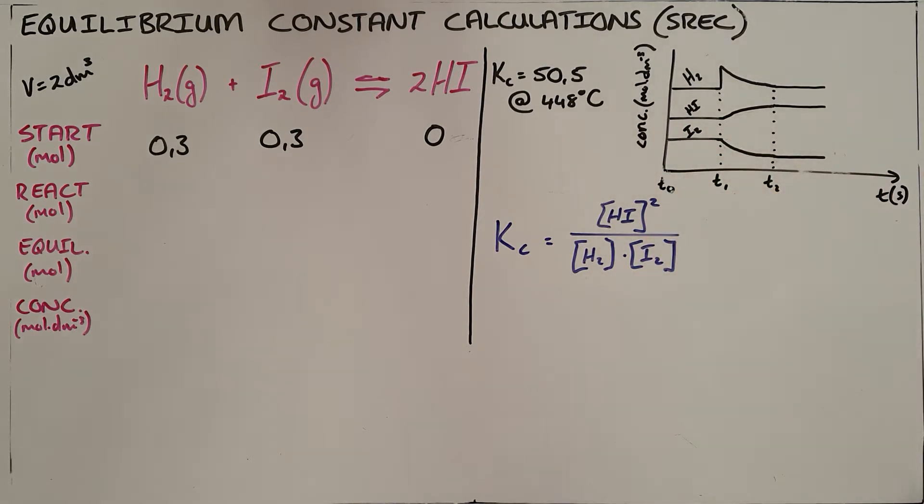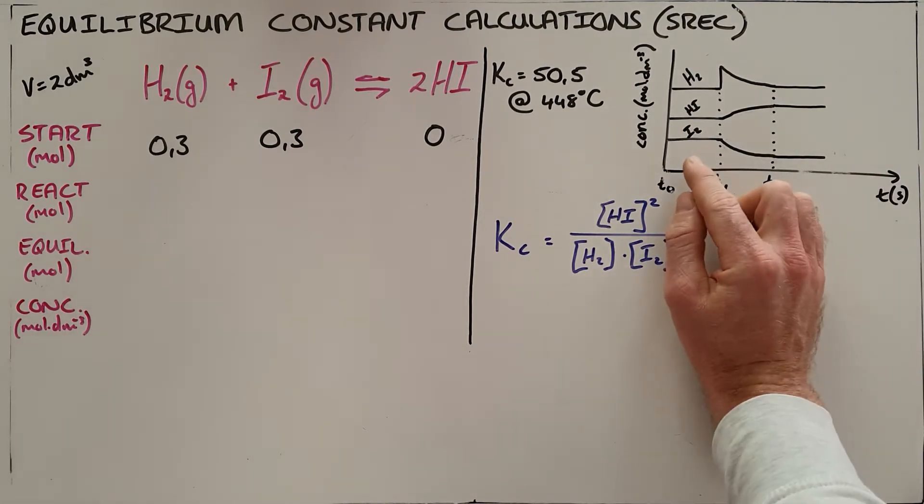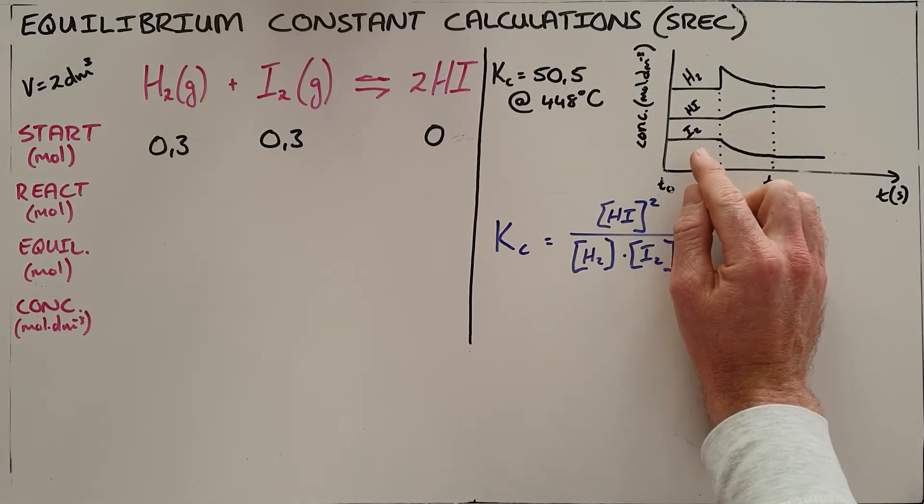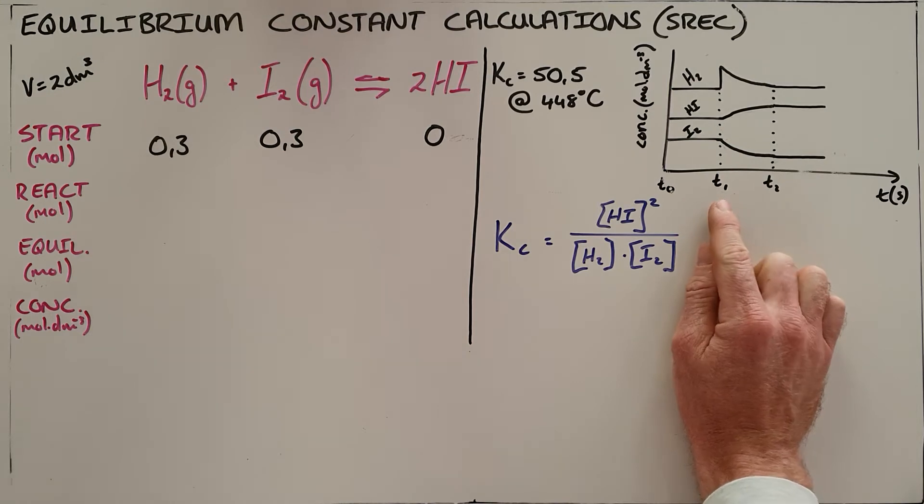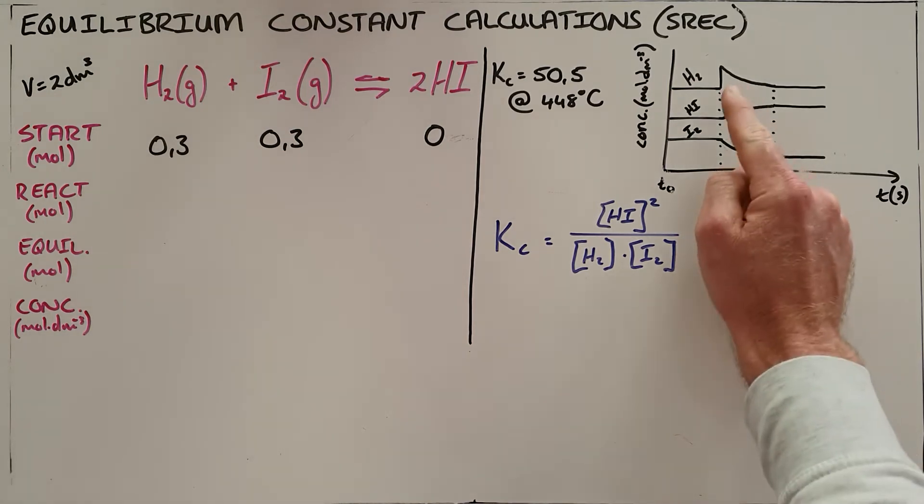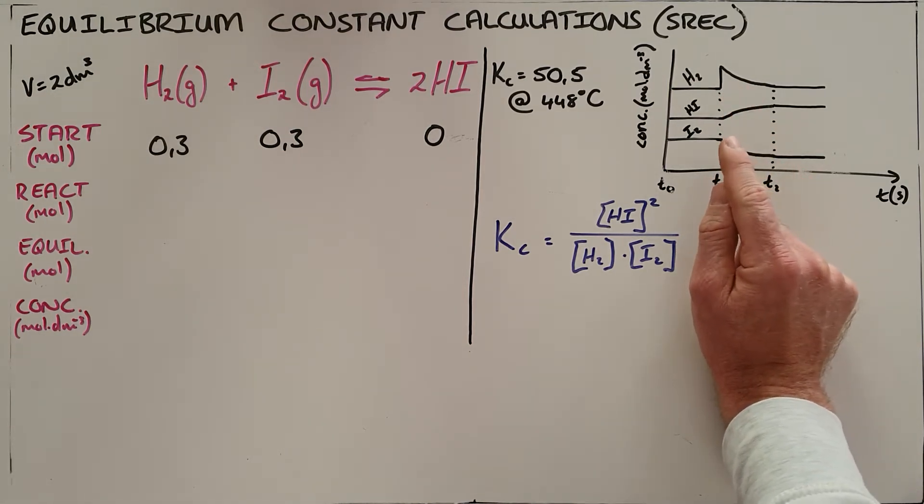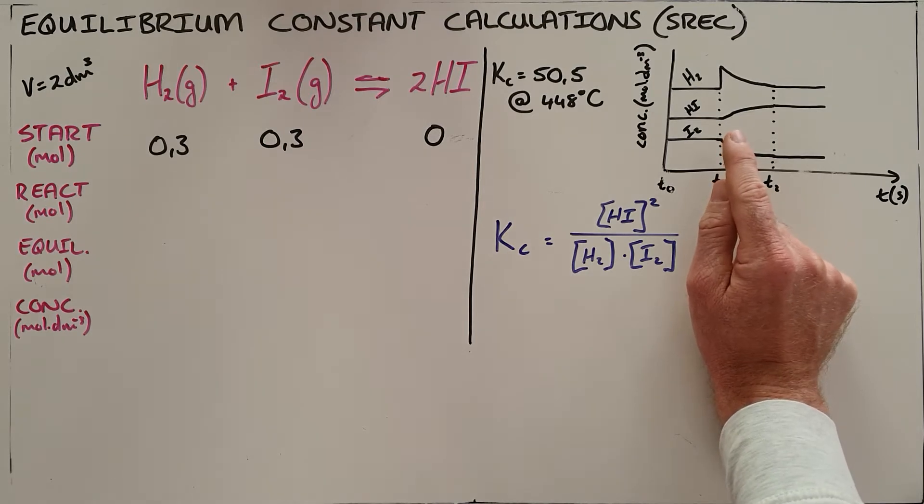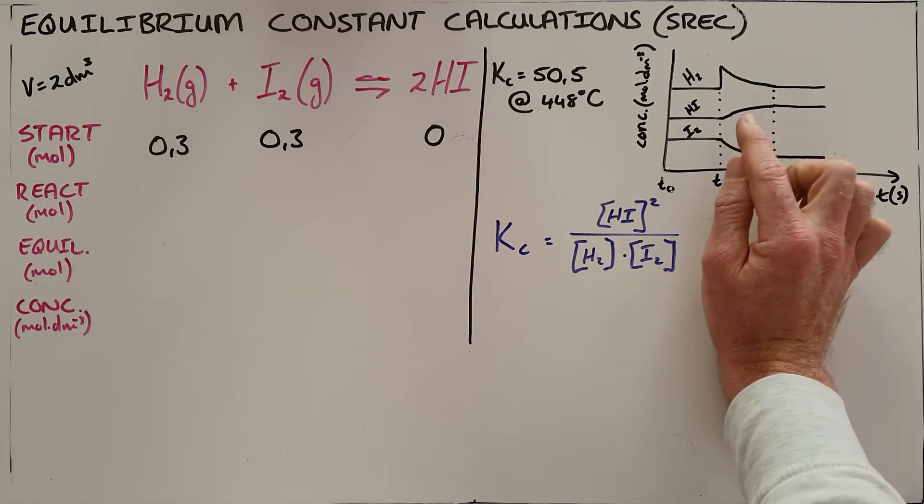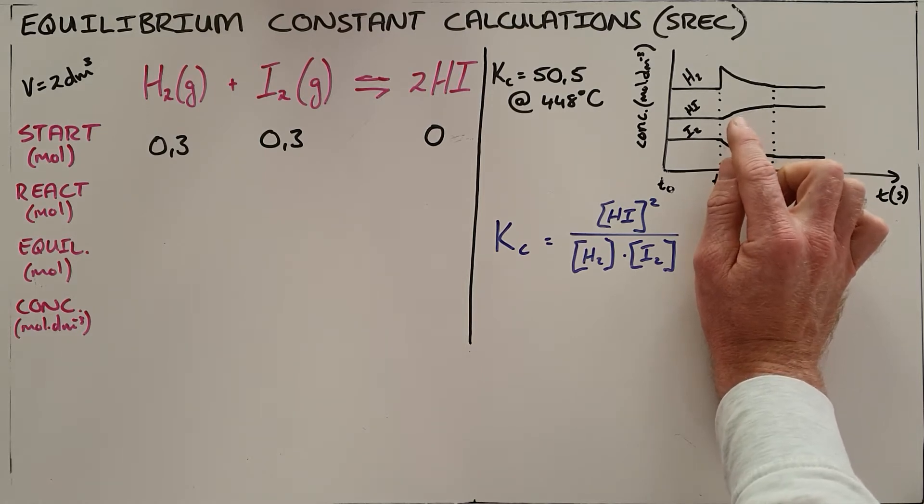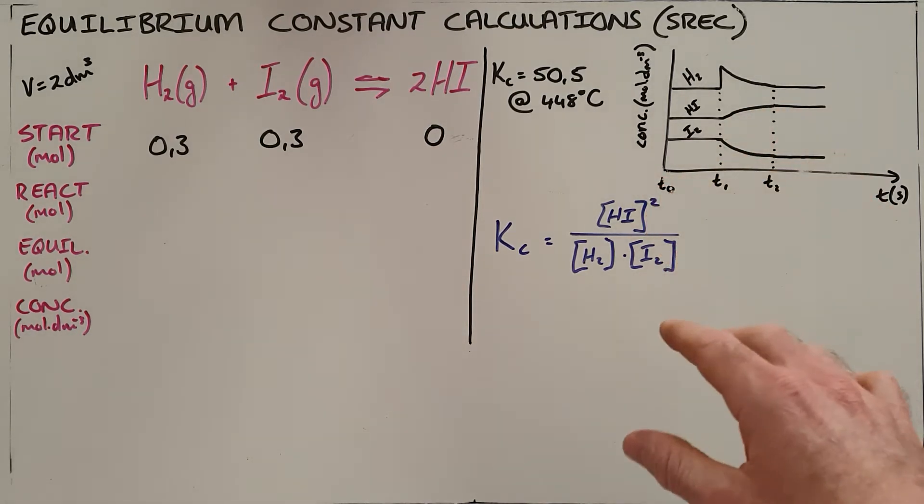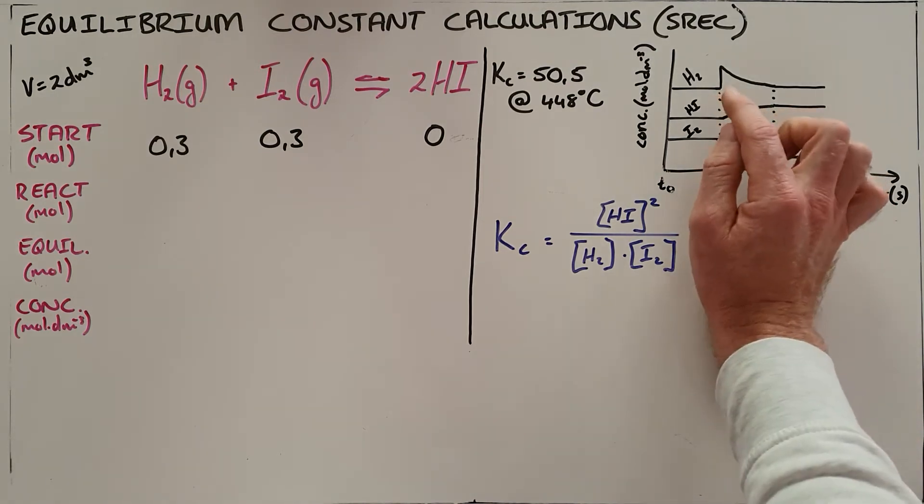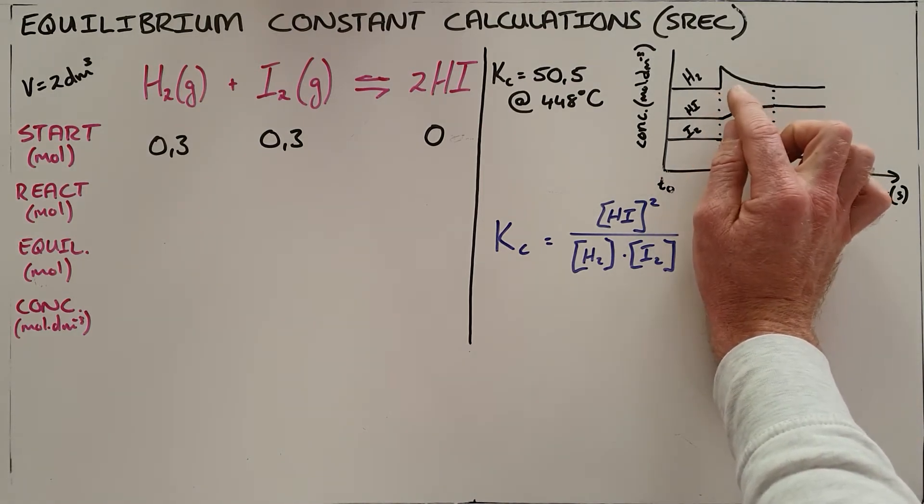From T0 to T1, this reaction is at equilibrium because the concentrations are constant. At time T1, the concentration of hydrogen spikes instantaneously. This can only be explained by adding hydrogen into the equilibrium mixture. So at T1, hydrogen gas was injected into the system.